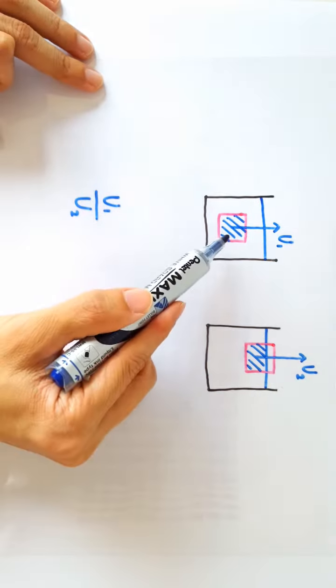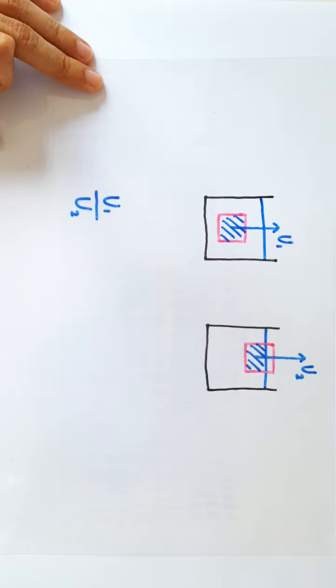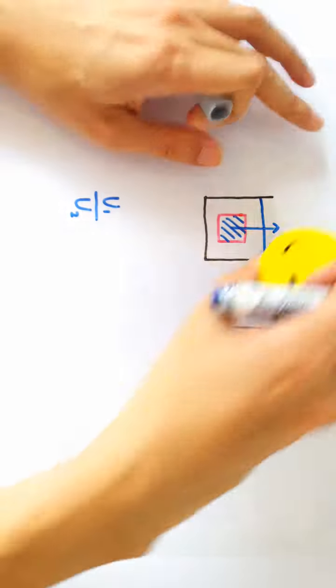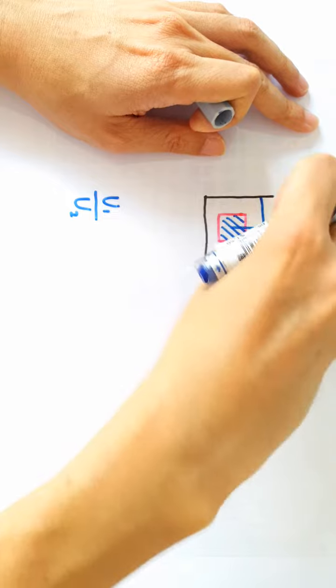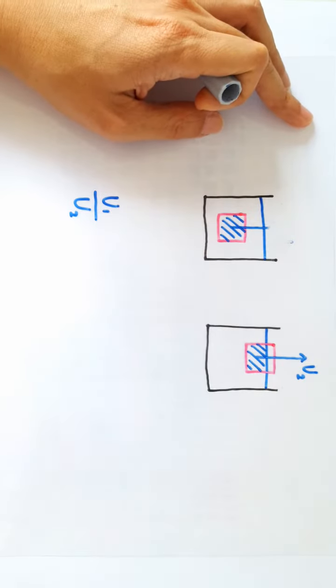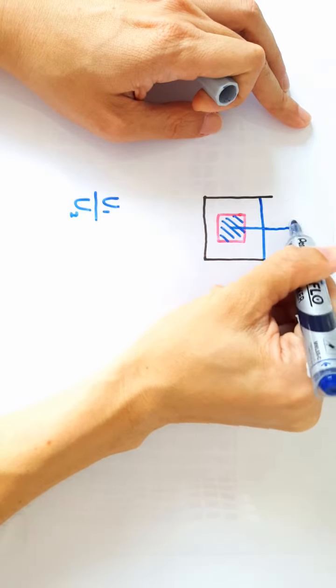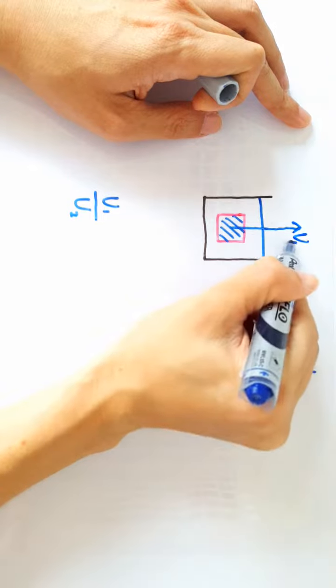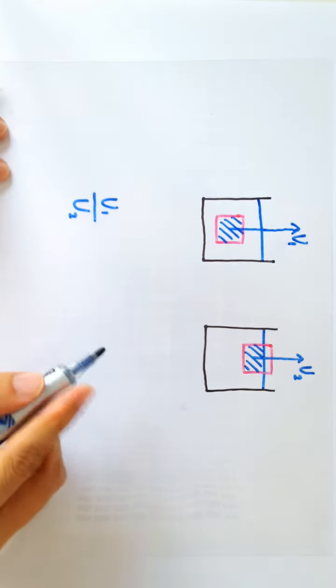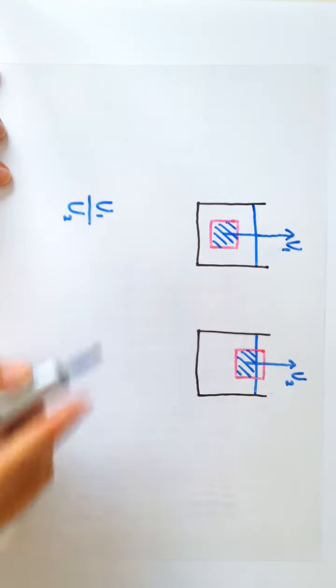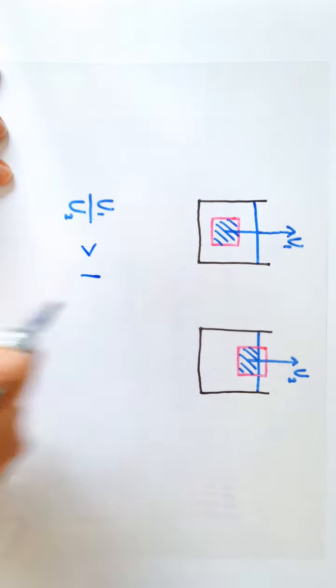Since upthrust is equal to the weight of the fluid displaced, straight away we can tell that the upthrust in the first case here is larger than the upthrust when it is partially submerged. So straight away we can already tell that the ratio is going to be larger than 1.